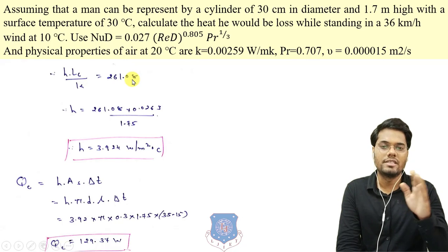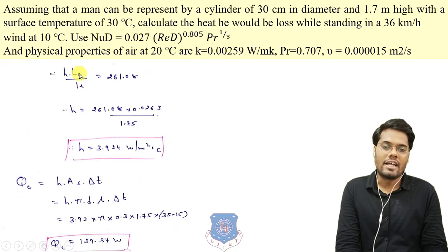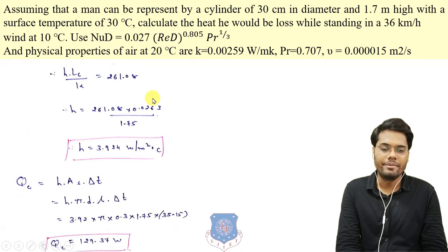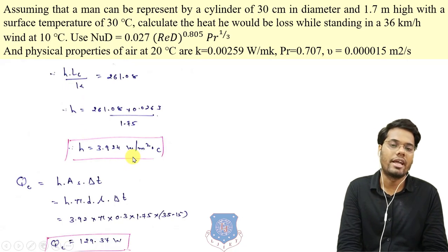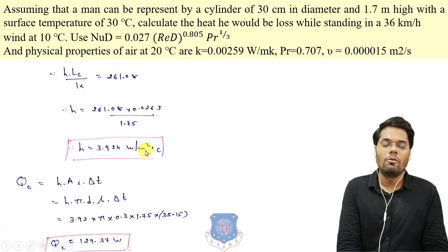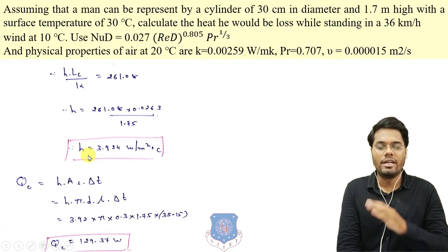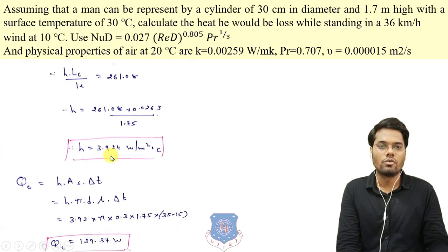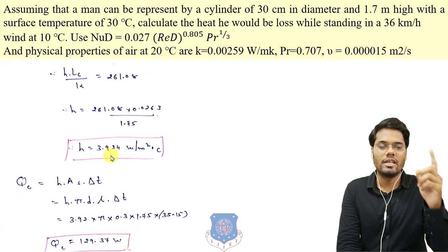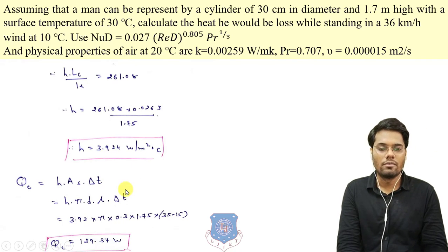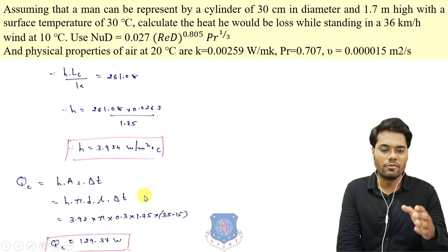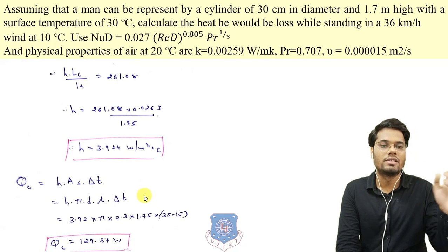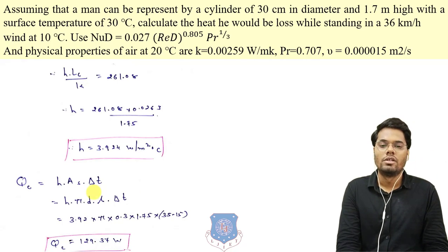Using Nu = H·Lc/k, where characteristic dimension is height = 1.7 m and conductivity = 0.00259 W/mK, solving for H gives the convective heat transfer coefficient as 3.9 W/m²·°C. The heat transfer by convection is Q = H·A·ΔT, where A = π·D·L for the cylinder geometry, ΔT = 35 − 15 = 20°C. The convective heat transfer rate is 129.37 W.